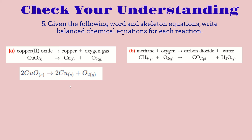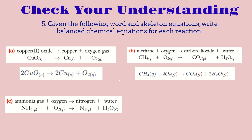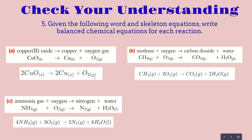For the second equation, methane + oxygen = carbon dioxide + water. To balance it, we add a coefficient of two in front of oxygen and a coefficient of two in front of water: CH₄ + 2O₂ = CO₂ + 2H₂O. For the third equation, ammonia gas + oxygen = nitrogen + water. To balance this, we add a coefficient of four in front of ammonia, three in front of oxygen, two in front of nitrogen, and six in front of water: 4NH₃ + 3O₂ = 2N₂ + 6H₂O.